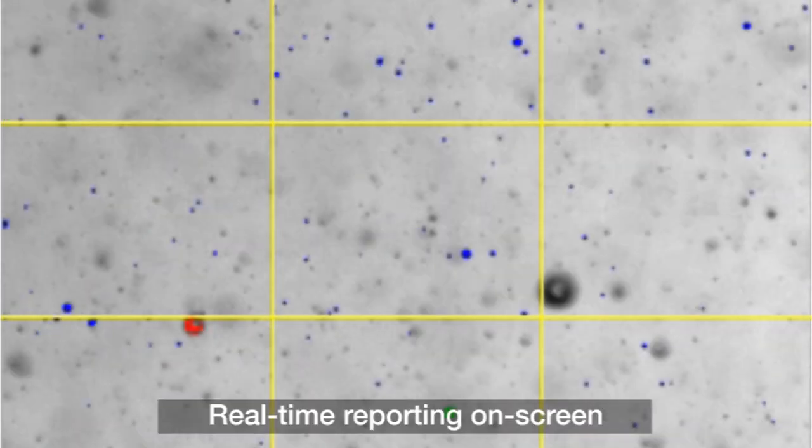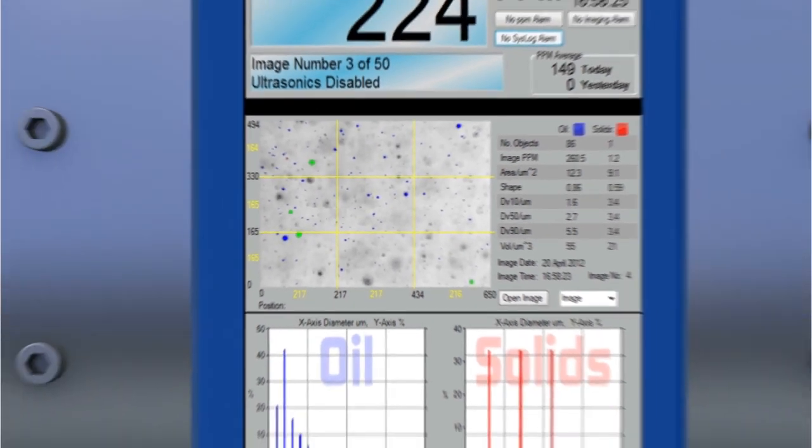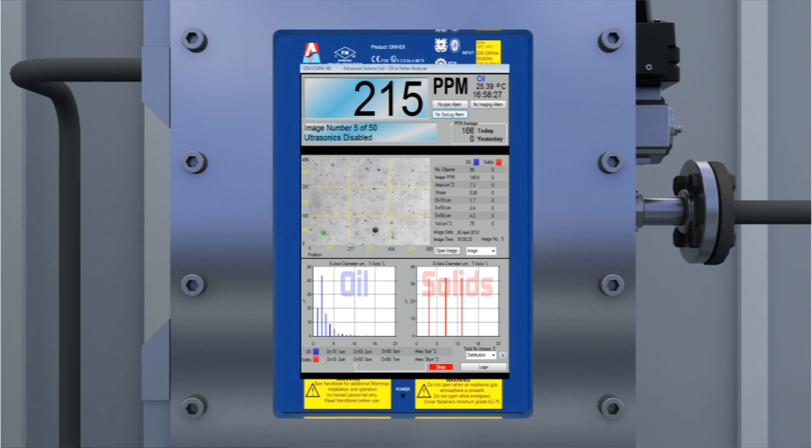As this process progresses, an accurate, detailed dataset builds and a clear picture of the water content becomes evident. All data is reported on the analyzer screen, along with the fluorescent PPM measurement.